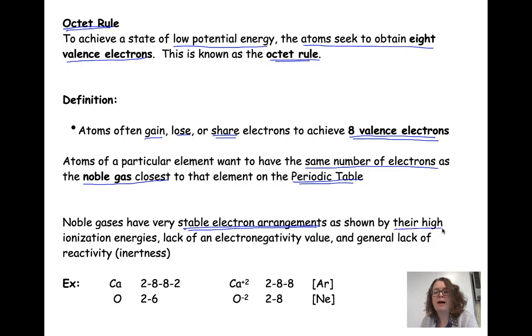Also, they have high ionization energies. It's difficult to pull electrons away from noble gases because they are very stable. So to pull an electron away takes a lot of energy. They also don't really have an electronegativity value. Electronegativity values are based on atoms that are in bonds and sharing electrons with other atoms. And noble gases don't really do that, and it makes them very inert, like lack of reactivity.